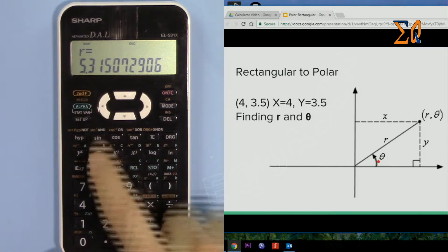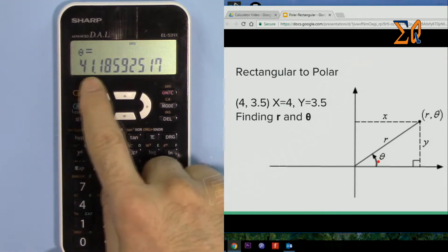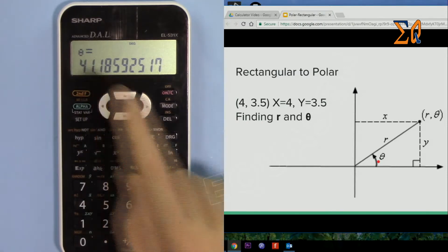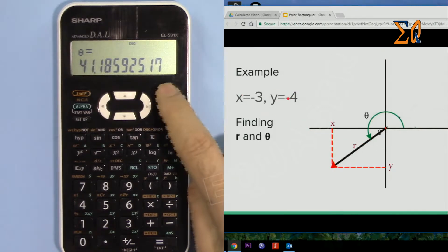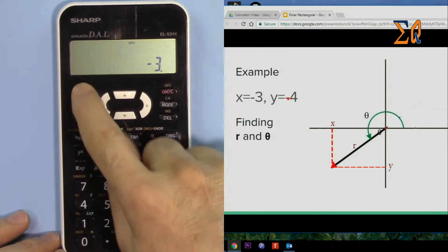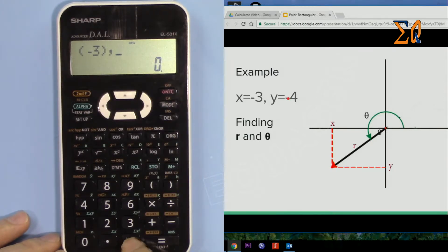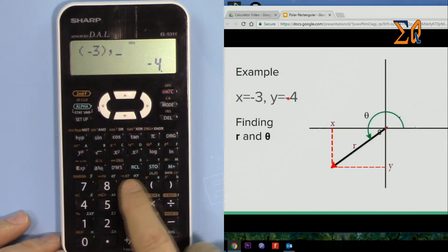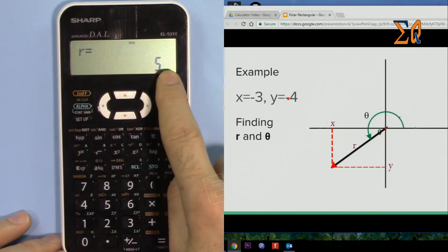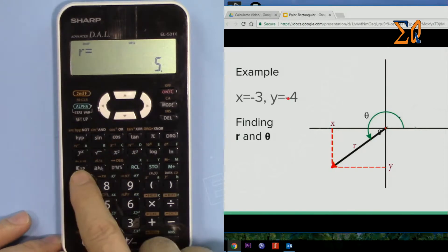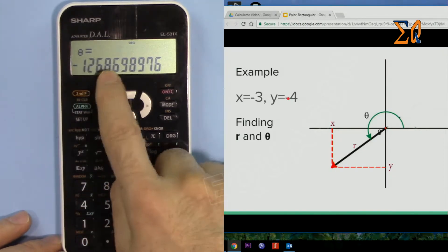Now let's do this angle. X is minus 3, Y is minus 4. Minus 3, second function, comma, minus 4. This time we want to get the r and theta. Second function. So r is 5. And then second function, EXP - this button - the theta is minus 126 degrees.